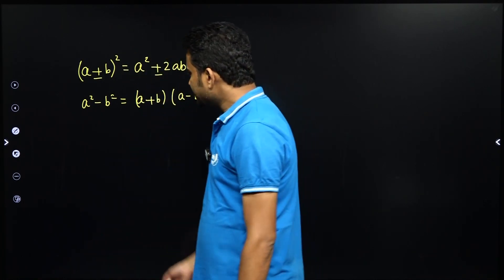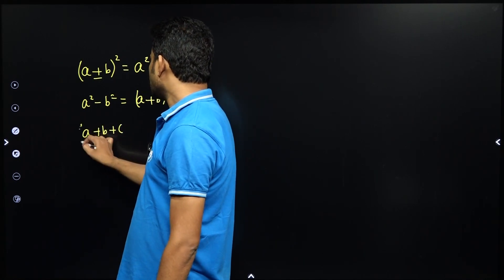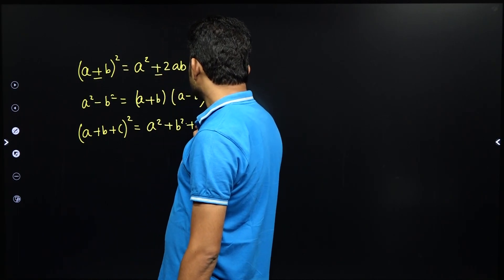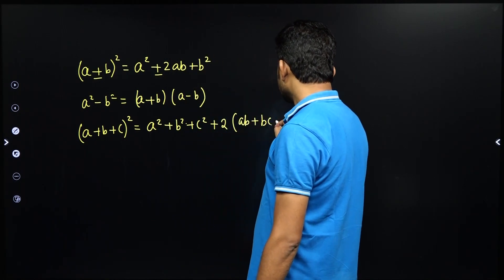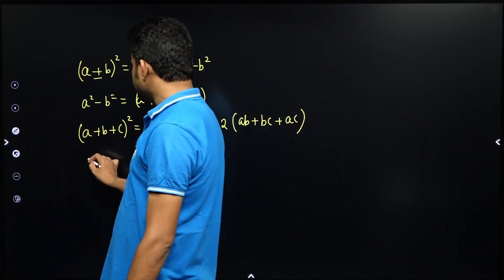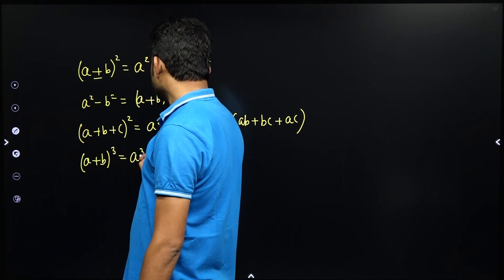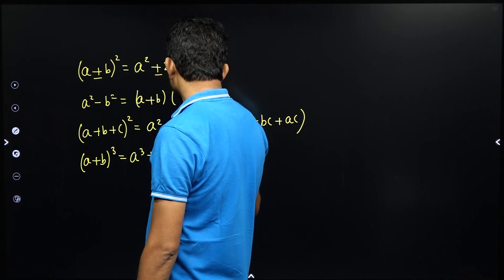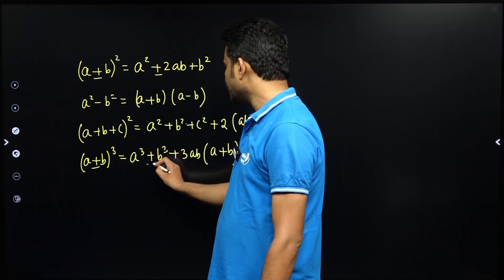Similarly, a plus b plus c whole square is a square plus b square plus c square plus 2 times of ab plus bc plus ac. And what is a plus b whole cube? a plus b whole cube is a cube plus b cube plus 3ab(a plus b). If I ask what is a minus b whole cube, for minus, all plus signs become minus.